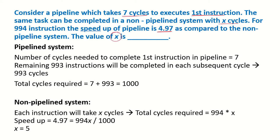What is the value of X? We know that in a pipeline system, the 1st instruction will require as many clock cycles as the number of stages in that pipeline. After that, the subsequent instructions will be out in every subsequent clock cycle.